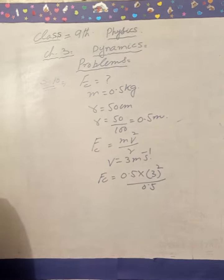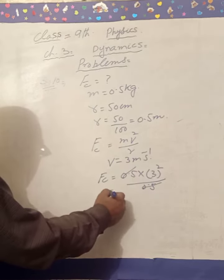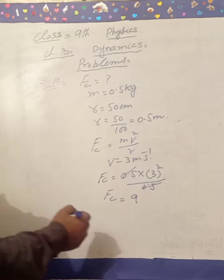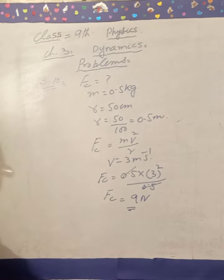0.5 and 0.5 cancel. After canceling, the centripetal force is equal to 9 Newton.